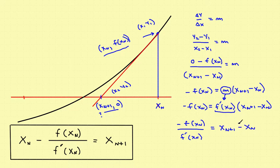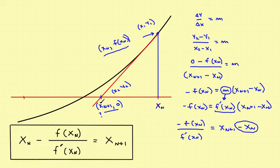The final step is to move x sub n to the other side and make it positive, which gives us Newton's formula: x sub n plus 1 equals x sub n minus f of x sub n divided by f prime of x sub n. If you know the first point, you can use this formula to find the second point, then repeat the process to find the third, fourth, or as far as you want to go. That's the derivation of where Newton's method comes from. In the next video, we'll use this method to actually determine the zeros of a function.